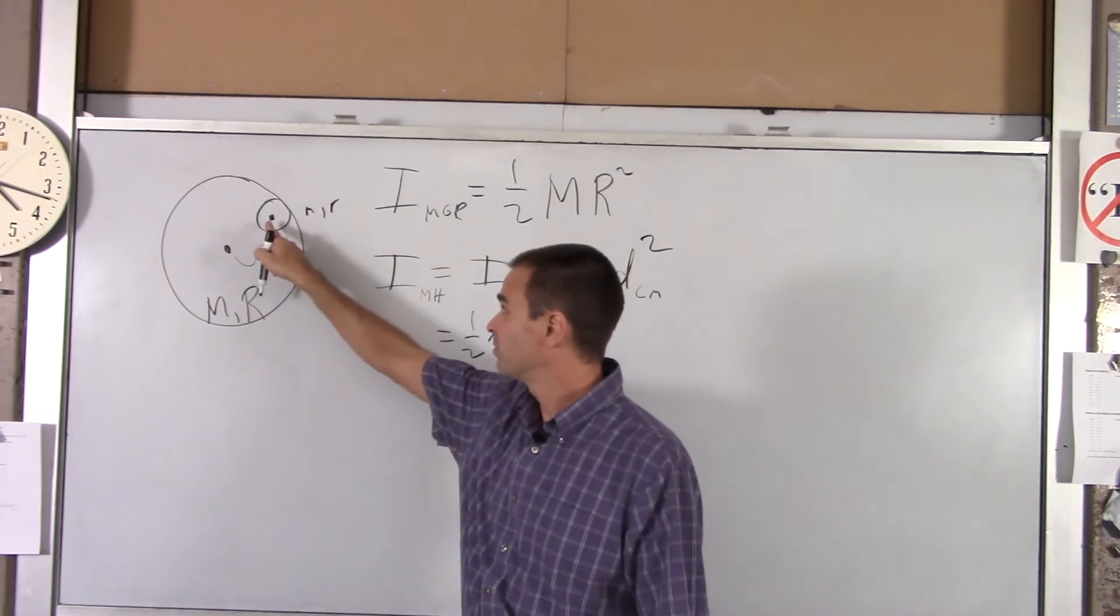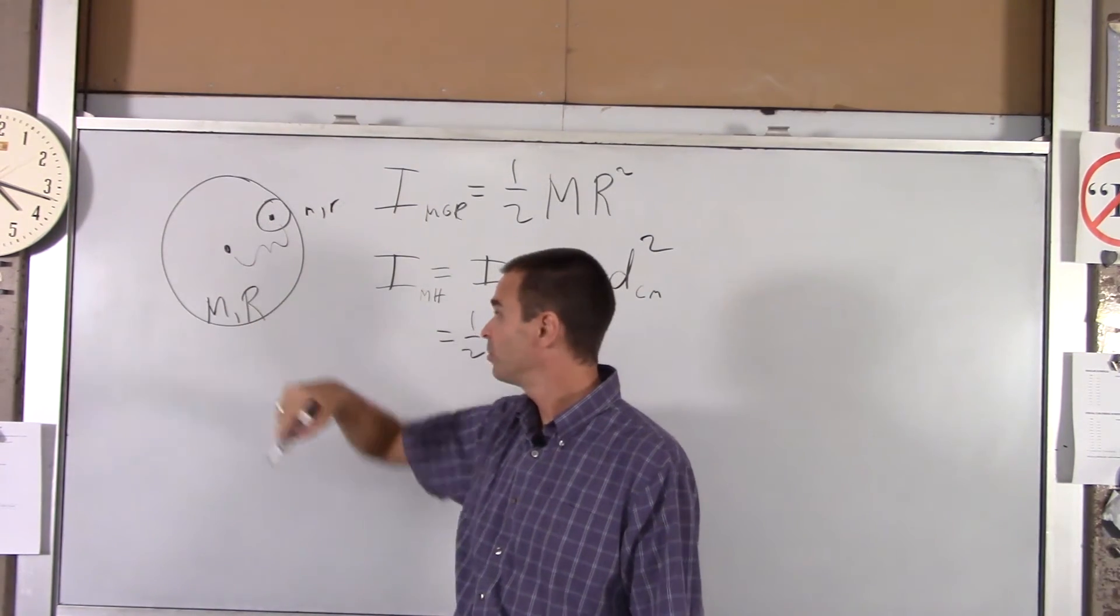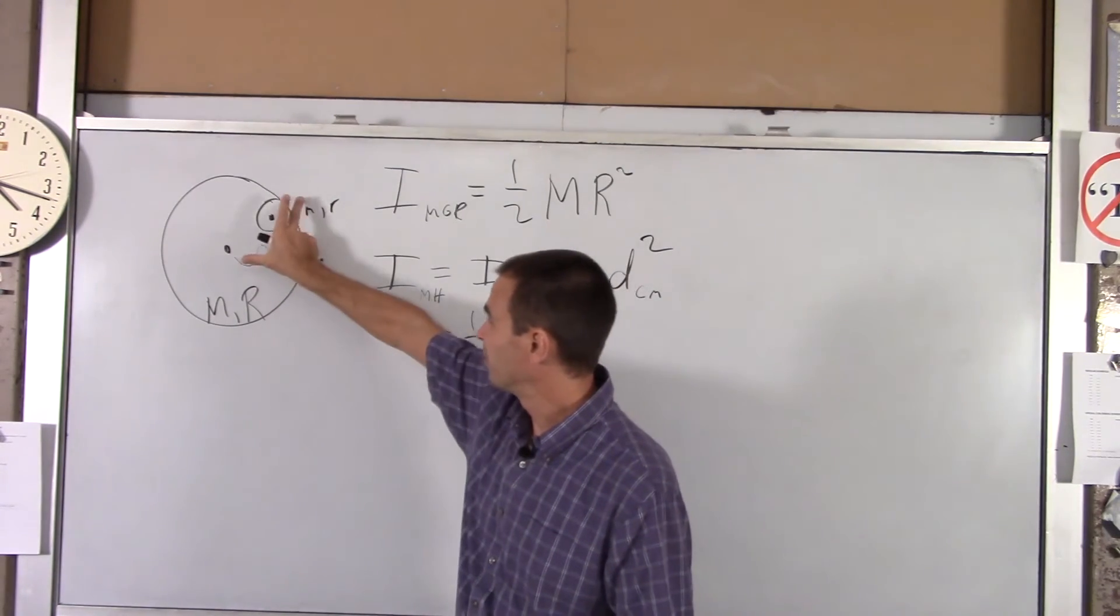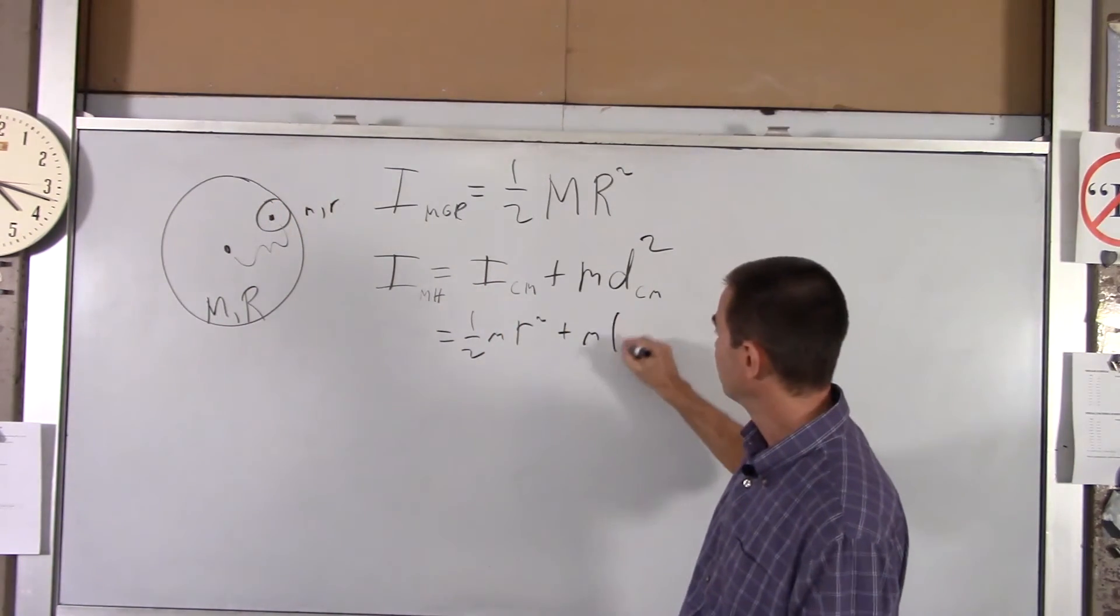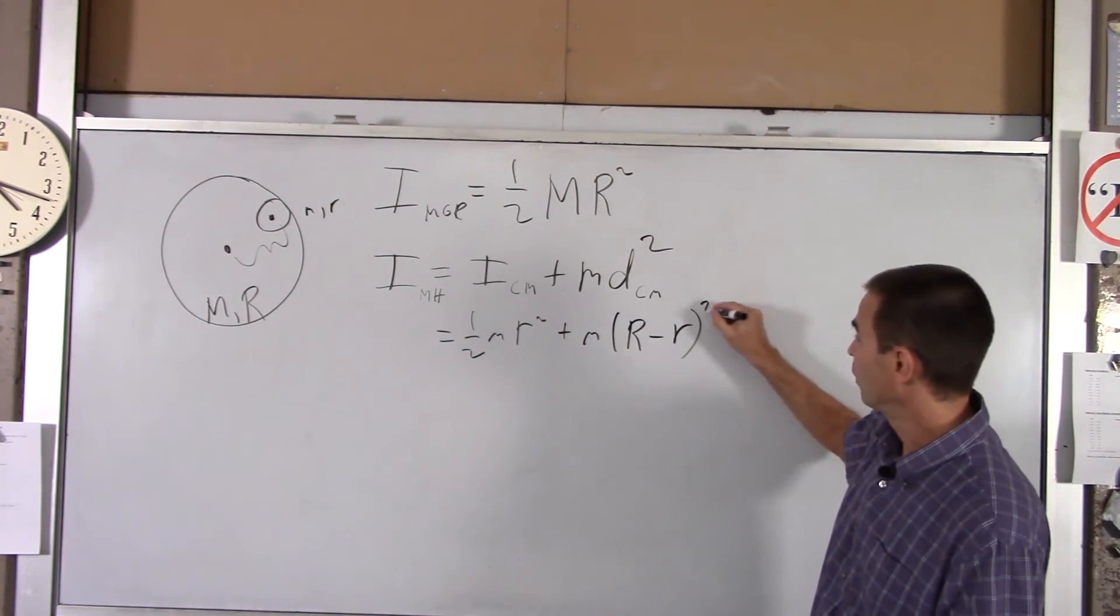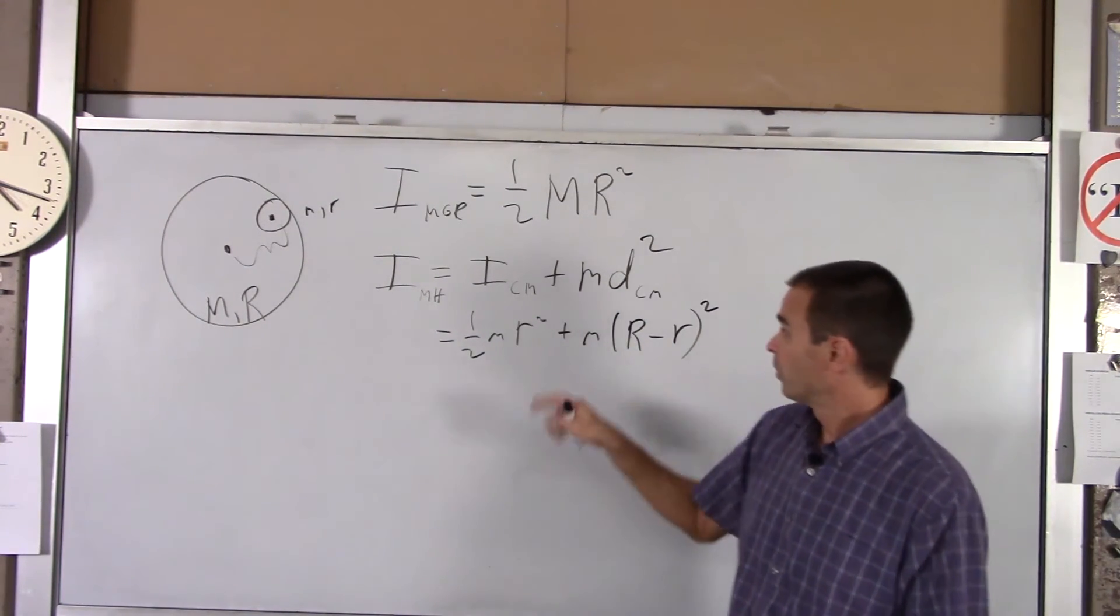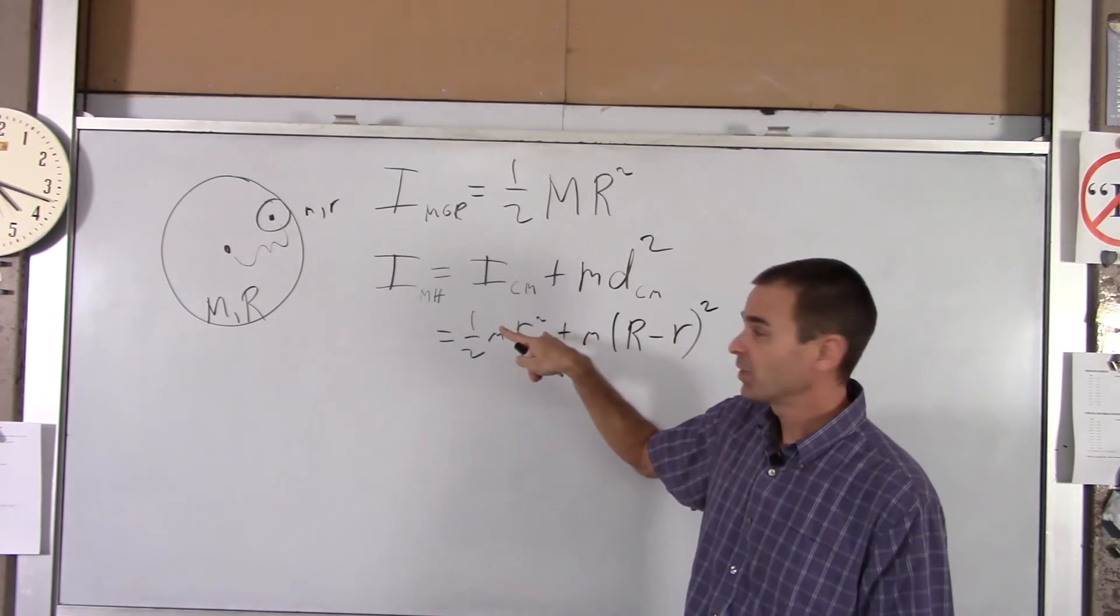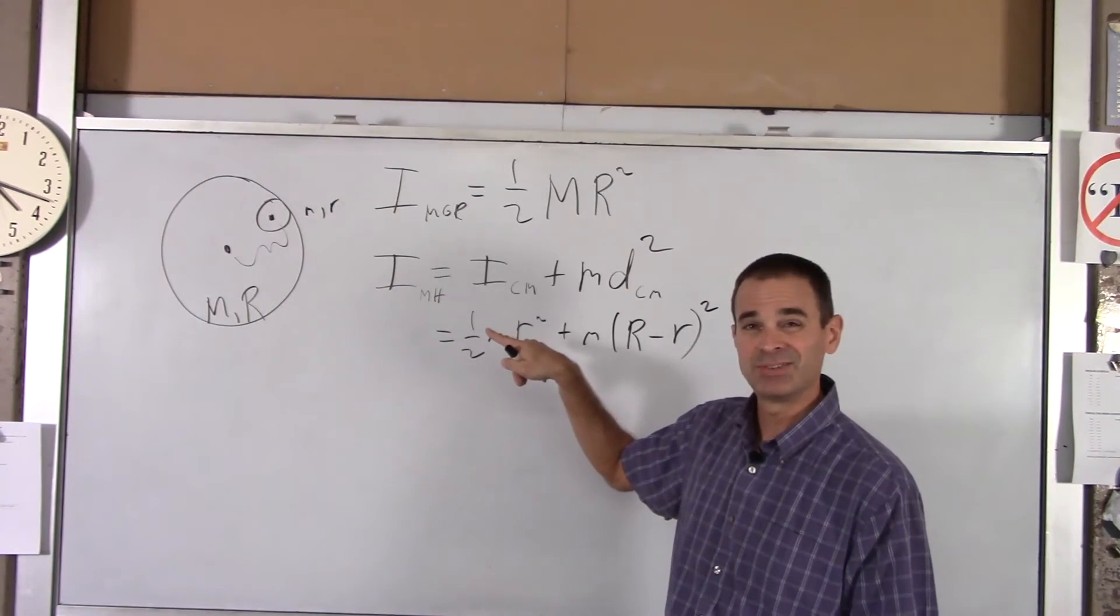So how far is the center of mass from the manhole cover to the center of our system or to our pivot point that we're studying? That's really simple. It's the big radius minus the little radius. So this would be big R minus little r, and I've got to square that. So for parallel axis theorem, we use that whenever something is not pivoting about its center.